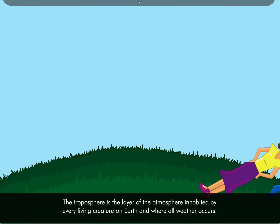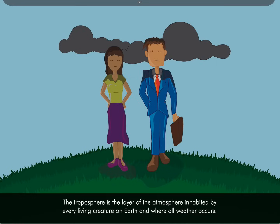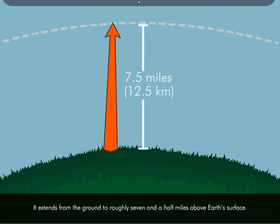The troposphere is the layer of the atmosphere inhabited by every living creature on earth and where all weather occurs. It extends from the ground to roughly seven and a half miles above Earth's surface.